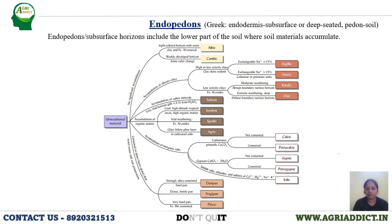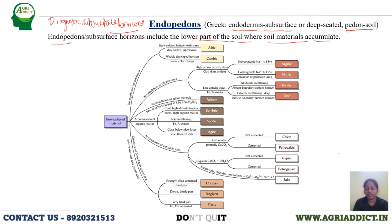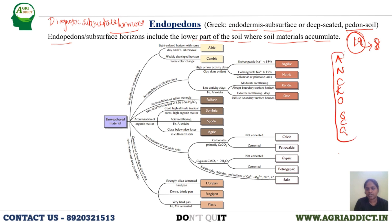Endopedons are derived from the Greek 'endo,' meaning subsurface or deep-seated, and 'pedon' meaning soil. Endopedons are diagnostic subsurface horizons and include the lower part of the soil where soil materials accumulate. Epipedons are nine in number; endopedons are 19 in number. Of these 19, eight are mostly prevalent in India: argillic, natric, cambic, kandic, oxic, spodic, calcic, and gypsic.